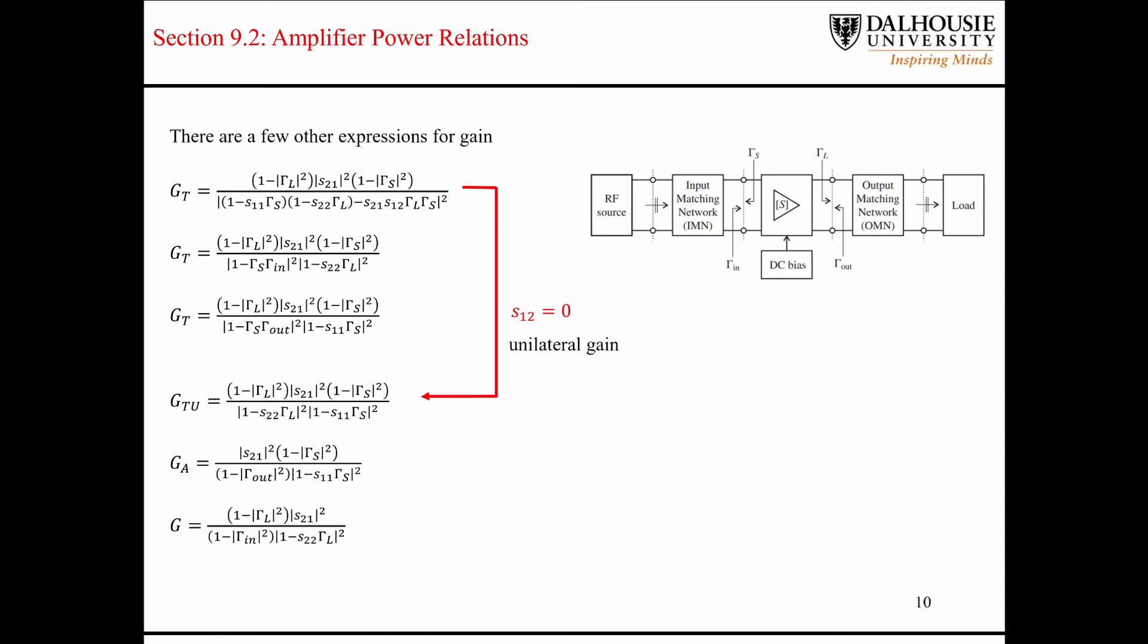For the unilateral gain expression, if you assume that none of the signal that's reflected at the output matching network is transferred back through the transistor and into the input port, then you can set S12 equal to zero and you end up with this equation here. Anytime you're dealing with a transistor where S12 is a small value, then you can basically make this approximation and end up with some satisfactory results.